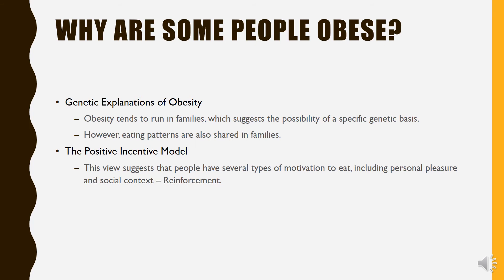The positive incentive model holds that positive reinforcement of eating has important consequences for weight maintenance, based on the concept of operant conditioning. For example, if a person is stressed, they eat food to cope with that stress, they enjoy the food and feel happy, so food becomes a reinforcer. The person keeps having episodes of eating behavior, eventually gaining weight and potentially developing obesity. This view suggests people have several motivations to eat, including personal pleasure, social context, and biological factors.